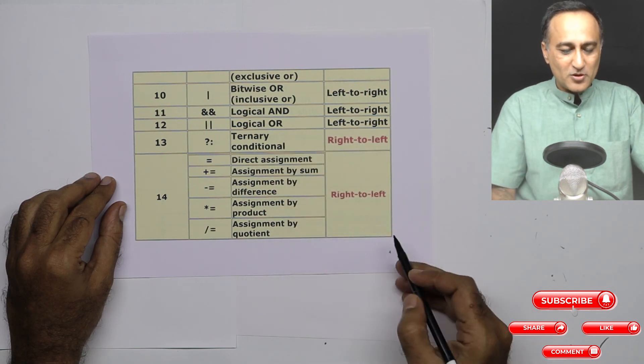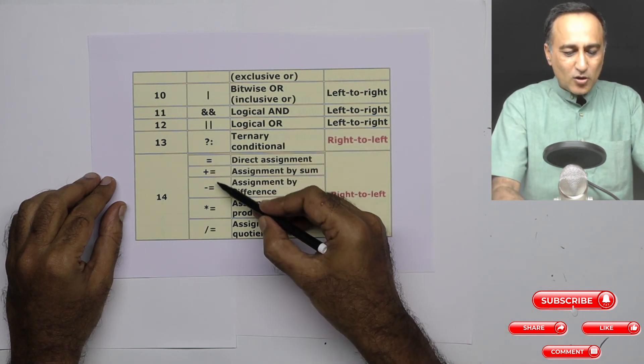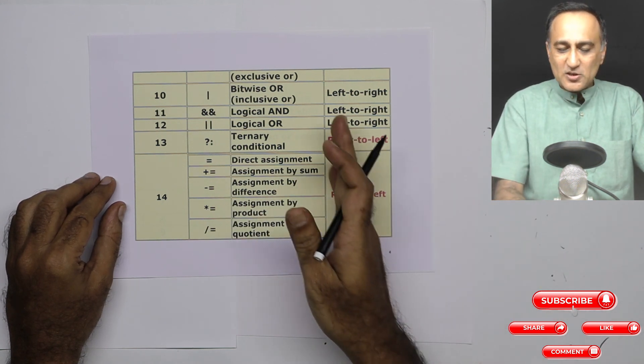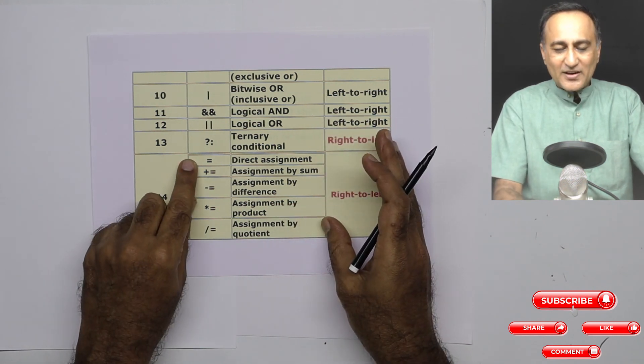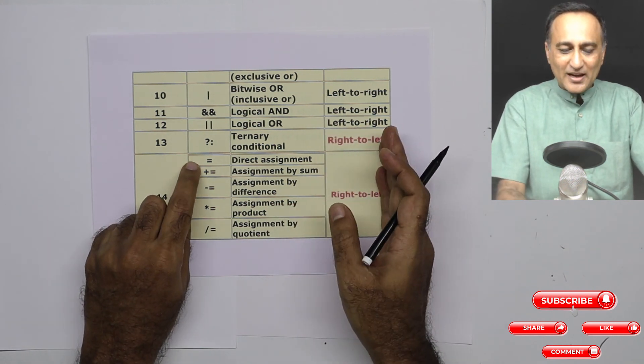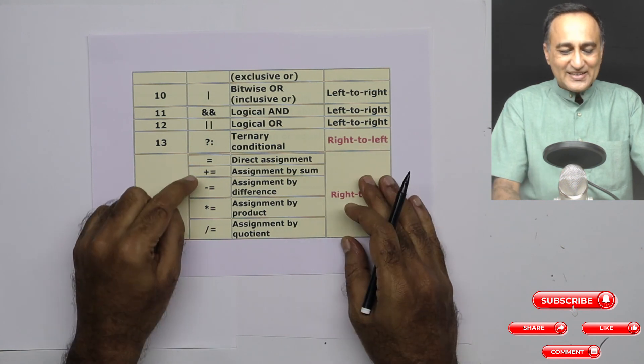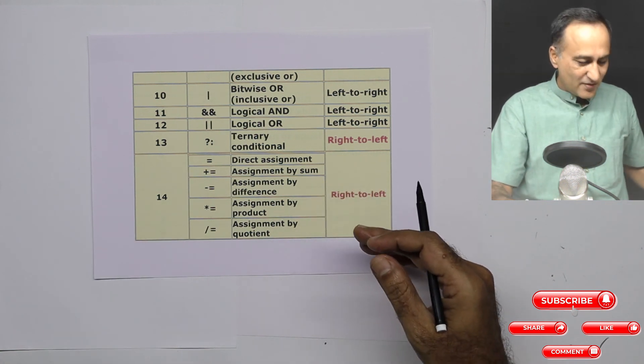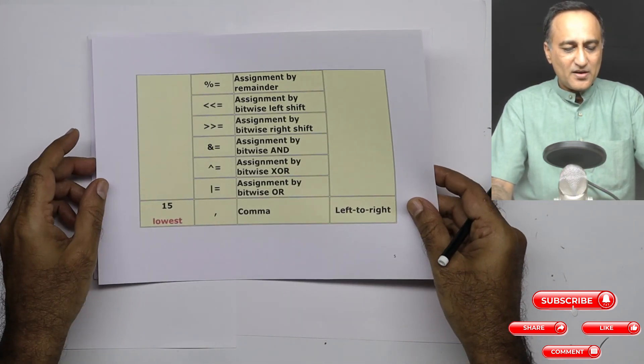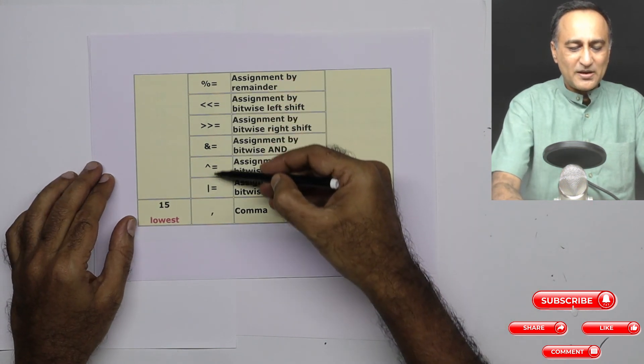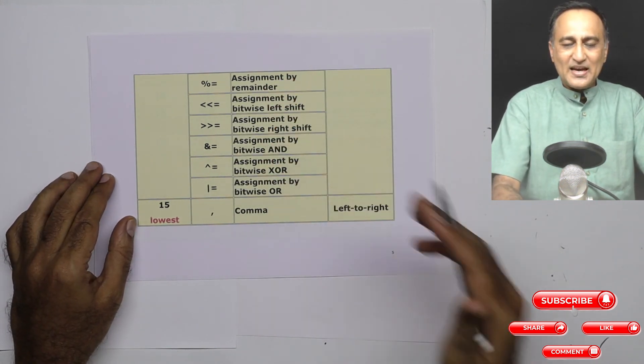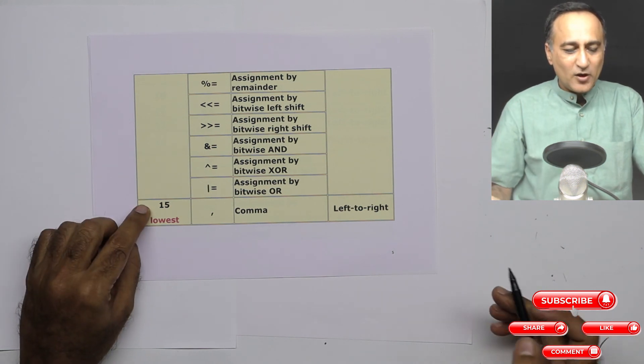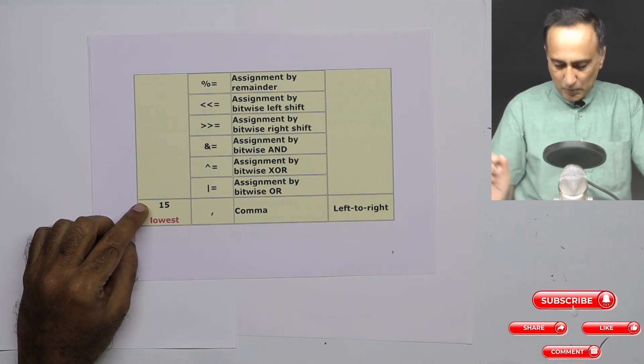Ternary operator, we're going to have some discussion, so don't bother about this. Now, these are all the operators which are used for assigning the results of the expression. Suppose on the right hand side, I've got some calculations. On the left hand side, if I have a variable, the result of the calculation is going to go to the left hand side. These are all shortcut assignments. We will take a look as and when we get there, then these are all continuation of the assignment operators. The important thing is assignment operators associativity is from right to left. And the lowest precedence is something called the comma operator.